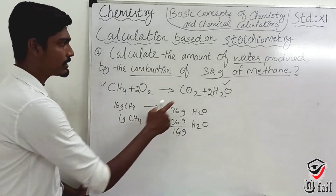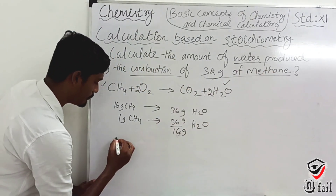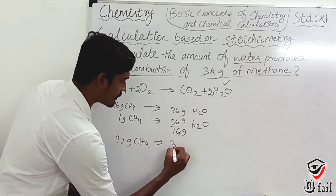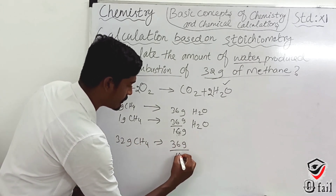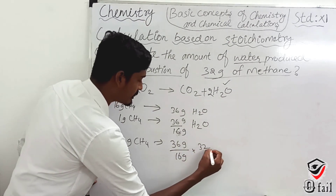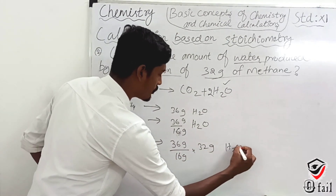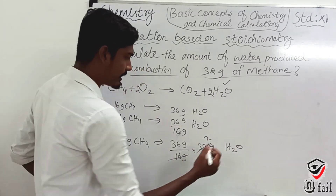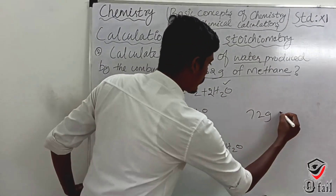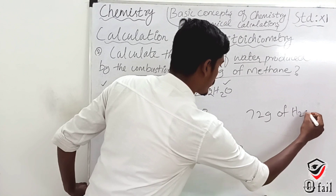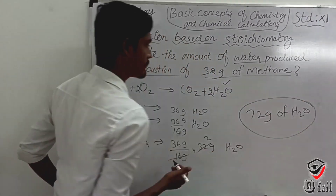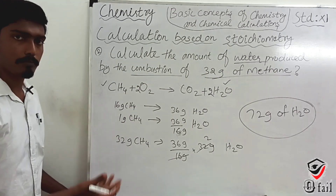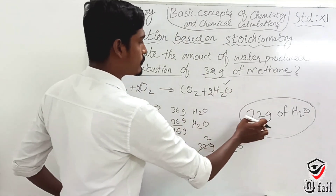For 32 grams of methane: 36 grams divided by 16 grams multiplied by 32 grams of H₂O. The final answer is 72 grams of H₂O. So combustion of 32 grams of methane produces 72 grams of water.